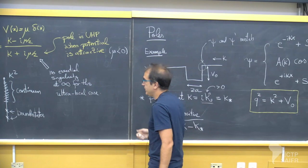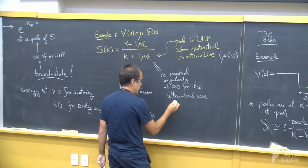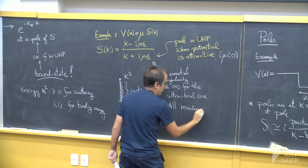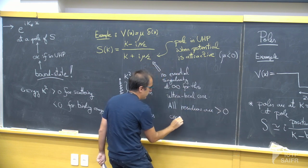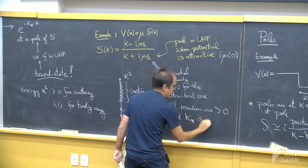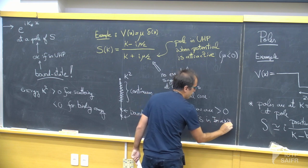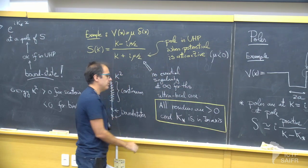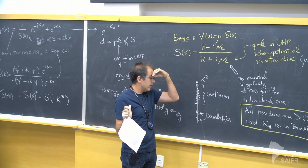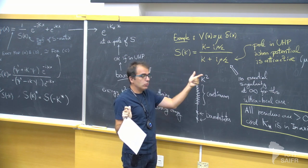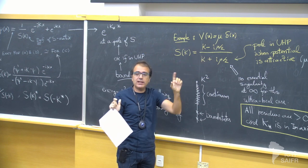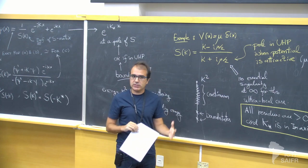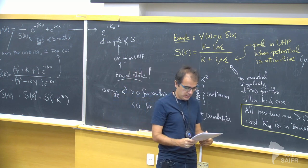So we would like to show that all residues are positive and that k* is in the imaginary axis. That's what we are going to establish in a few seconds — it's an important result. S-matrices have poles, but not just any poles: one, they need to be in the upper half plane; two, they need to be on the imaginary axis; and three, the residue needs to be positive. The residue being positive is the trickiest one to show — it's a subtle consequence of unitarity.